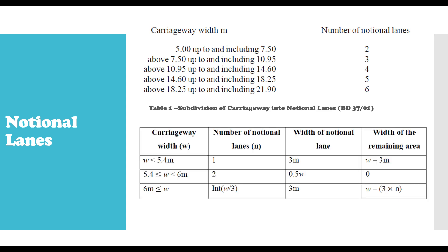For the European standard, it is a little bit different. When your carriageway is less than 5.4 meters, the number of notional lanes you can have is 1. Note the difference: if your carriageway is 5 meters, the British code gives you 2 notional lanes, but the European standard recommends 1 notional lane. When your carriageway width is between 5.4 and 6 meters, then you have 2 notional lanes according to the European code.